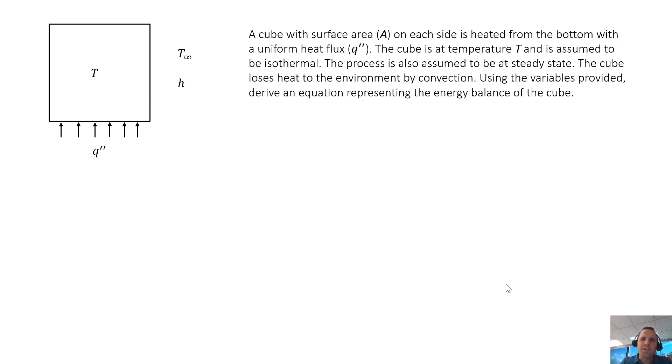All right, here's another heat transfer example problem. A cube with surface area A on each side is heated from the bottom with a uniform heat flux q double prime. The cube is at temperature T and is assumed to be isothermal. The process is also assumed to be at steady state. The cube loses heat to the environment by convection.